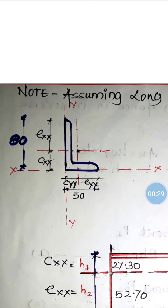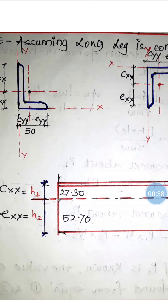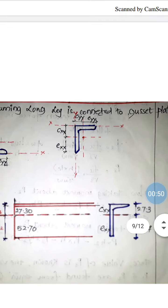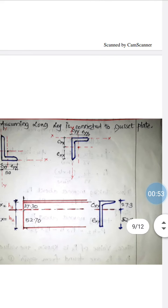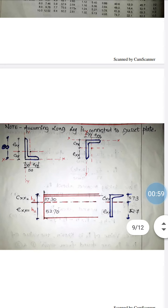We have an angle ISA 80×50, where 80mm is connected to the gusset plate. The properties are: cxx = 27.3mm and exx = 52.7mm — these are h1 and h2 respectively. Adding both values gives 80mm; if they don't add up to the leg length, the values are wrong. For horizontal axis use cxx and exx; for vertical axis use cyy and eyy.